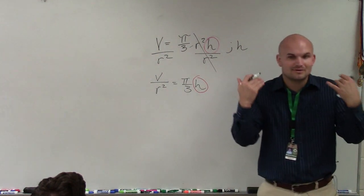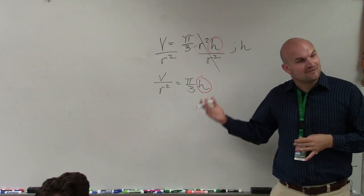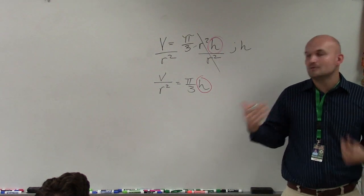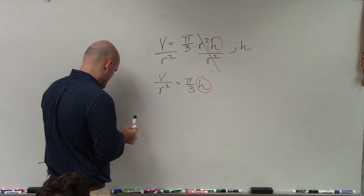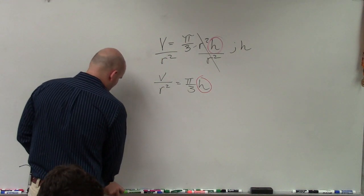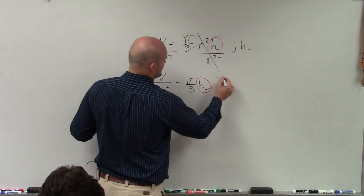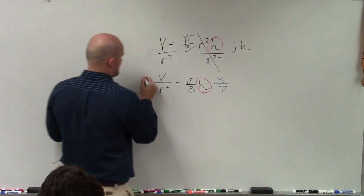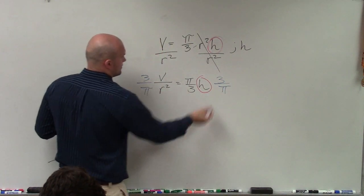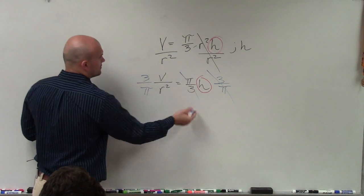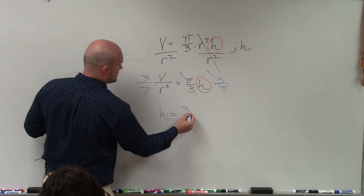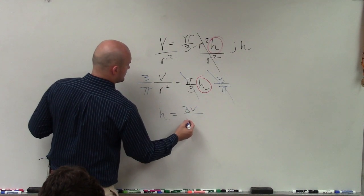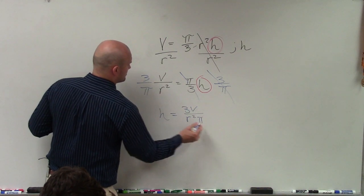We have to divide. But we don't like dividing fractions. We like to multiply by the reciprocal. So I'll just multiply. So to solve this problem, I'll multiply by the reciprocal, which would be 3 over pi. Therefore, my final answer is h equals 3v over pi r squared.